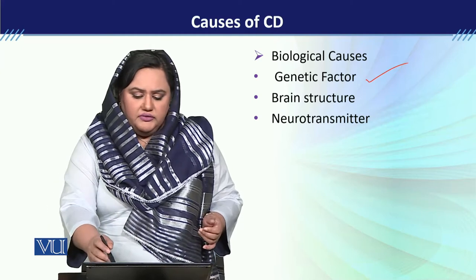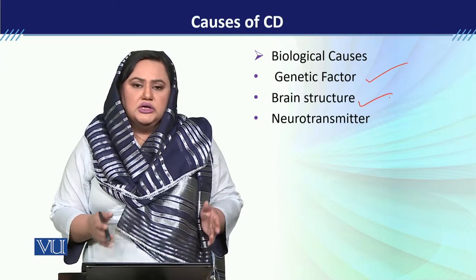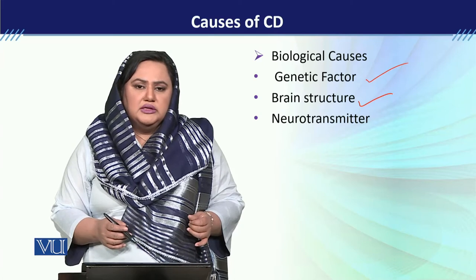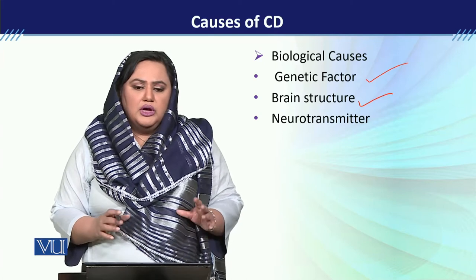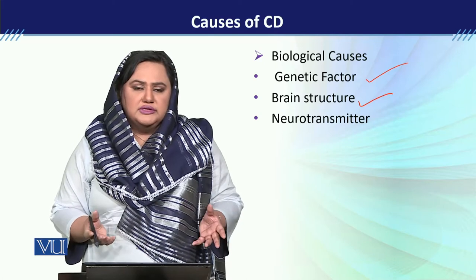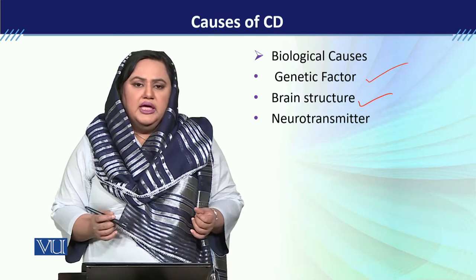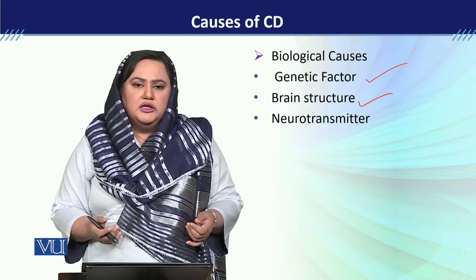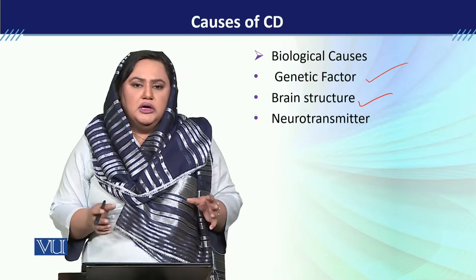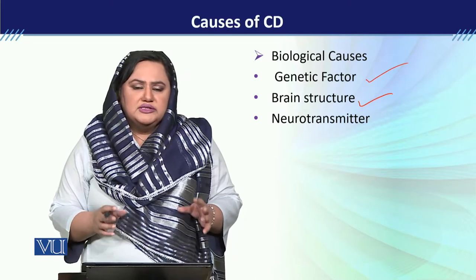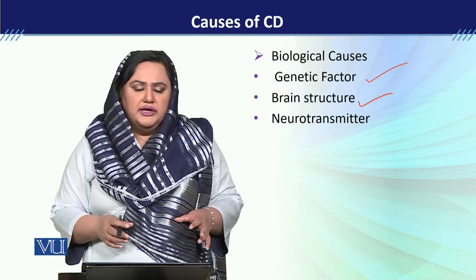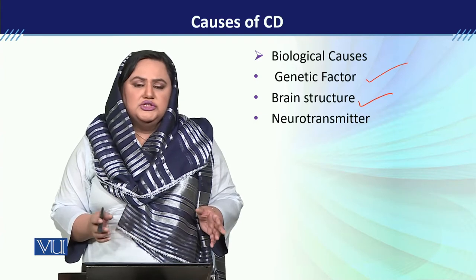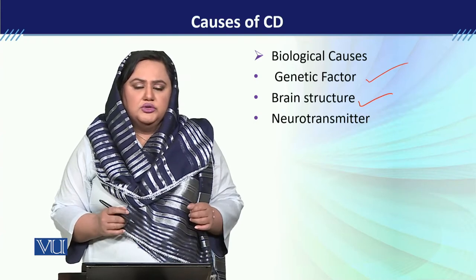Then we will talk about brain structure. MRI research shows that the brain structure of individuals with cyclothymic disorder is different compared to the general population.